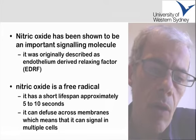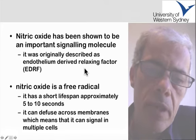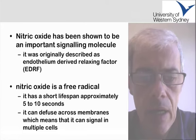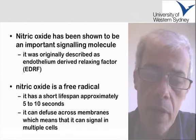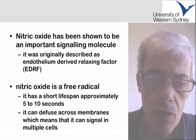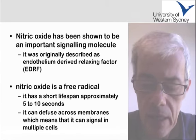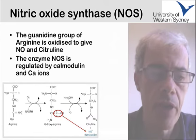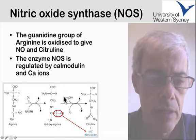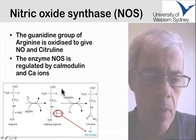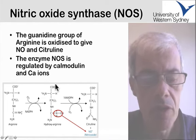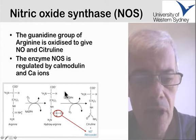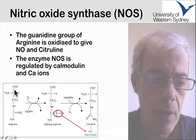Nitric oxide has been shown to be an important signaling molecule, but it's also a free radical. It has a short lifespan and, as we know, it can diffuse across membranes. Here's a little figure from the textbook which shows the synthesis of nitric oxide within a cell.